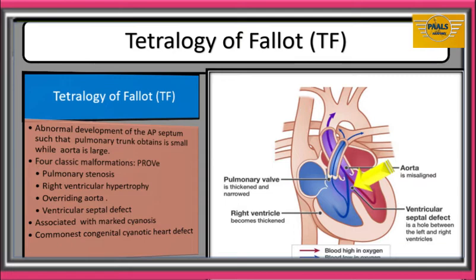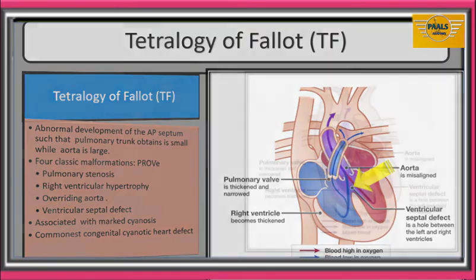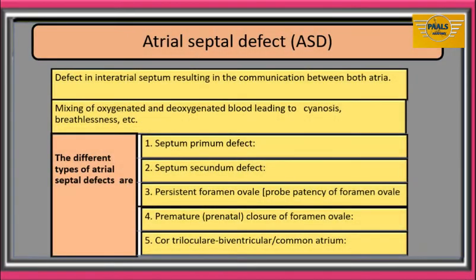We will now consider defects associated with the atrial wall. Atrial septal defect is any condition where there is a defect in the interatrial septum which results in communication between the right and left atrium. There will be mixing of oxygenated and deoxygenated blood, giving rise to symptoms like cyanosis, breathlessness, and others.